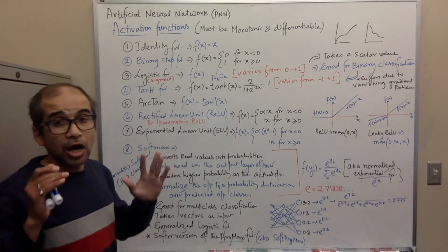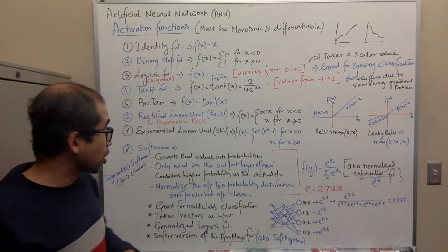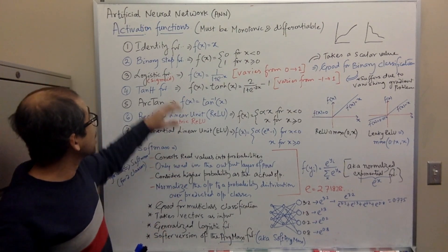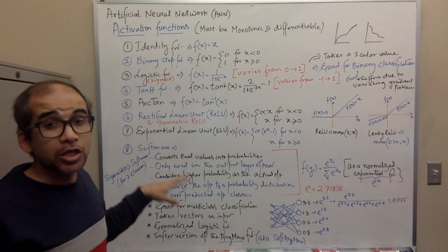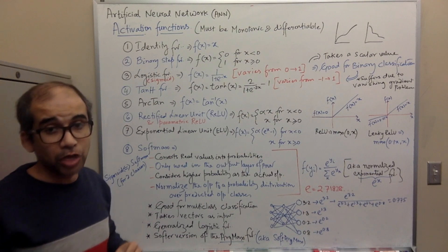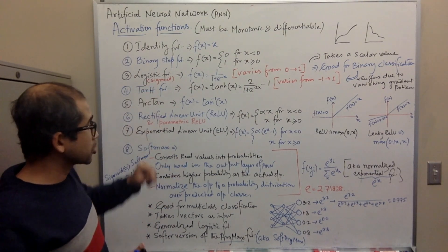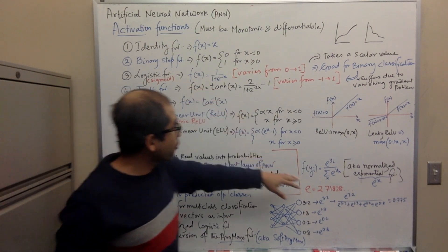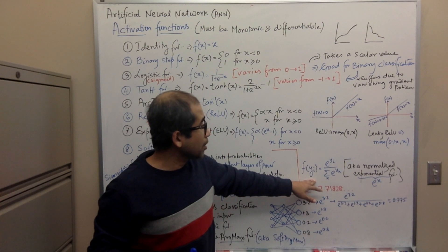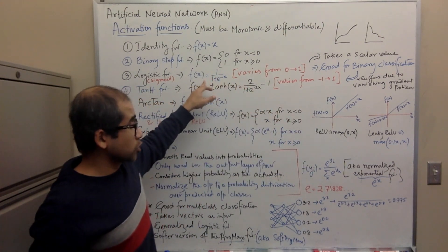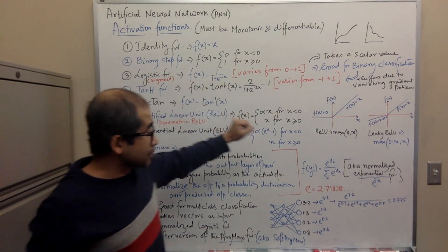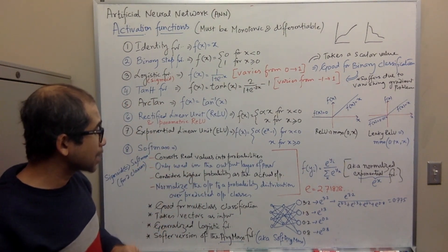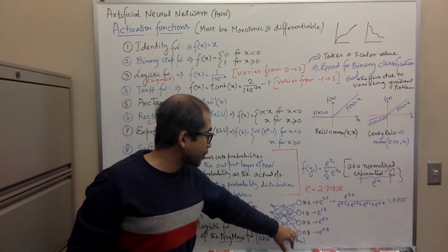Another important function is the softmax function. It is a special type of activation function used only in the output layer of a neural network. It converts real values into probabilities, and is mostly used for multi-class classification — whereas the logistic function is used for binary classification. Softmax is a variation of the sigmoid function; for binary classification, the two equations are equivalent if you multiply numerator and denominator by e^x.